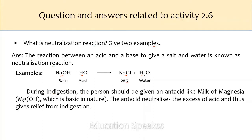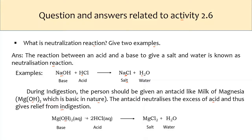Second example: during indigestion, a person should be given an antacid like milk of magnesia — magnesium hydroxide — which is basic in nature. The antacid neutralizes the excess acid and thus gives relief from indigestion. This reaction can be written as: magnesium hydroxide reacts with hydrochloric acid to give magnesium chloride and water. Here magnesium chloride is a salt.